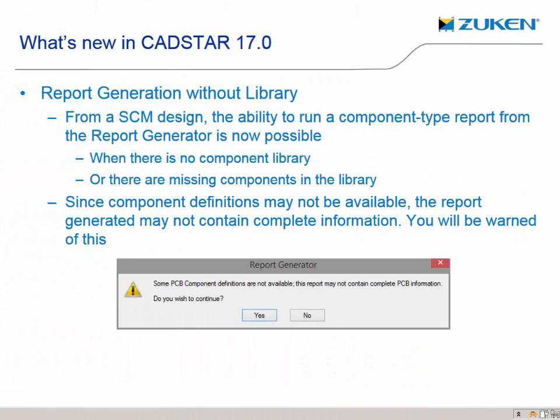We now have the ability to produce a parts list without a component library. Previously, when running a parts list report in a schematic, unless you have all the components available in the library, CADSTAR would not be able to collate the schematic and provide an output. So, for example, if you have been able to make a symbol and a part but cannot make the complex component yourself, you are still able to obtain a parts list report from the schematic and enable purchasing to source the parts to get your design out sooner.